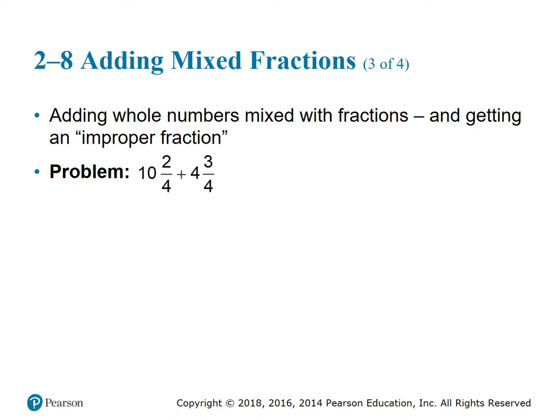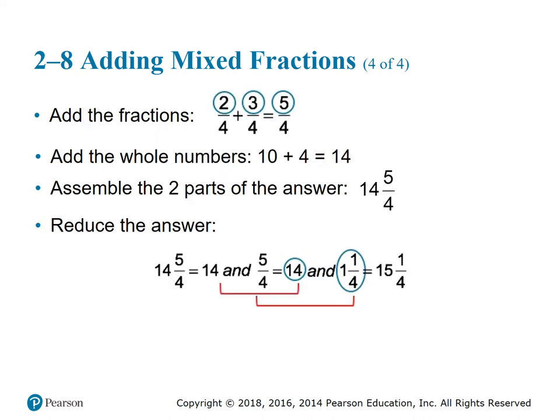Let's look at another example of adding mixed fractions: 10 and 2/4 plus 4 and 3/4. Pause the video and try it yourself. When we add 2/4 and 3/4: 2 plus 3 equals 5, keeping the denominator 4, giving 5/4. Then add the whole numbers: 10 and 4 gives 14. Assembling gives us 14 and 5/4.